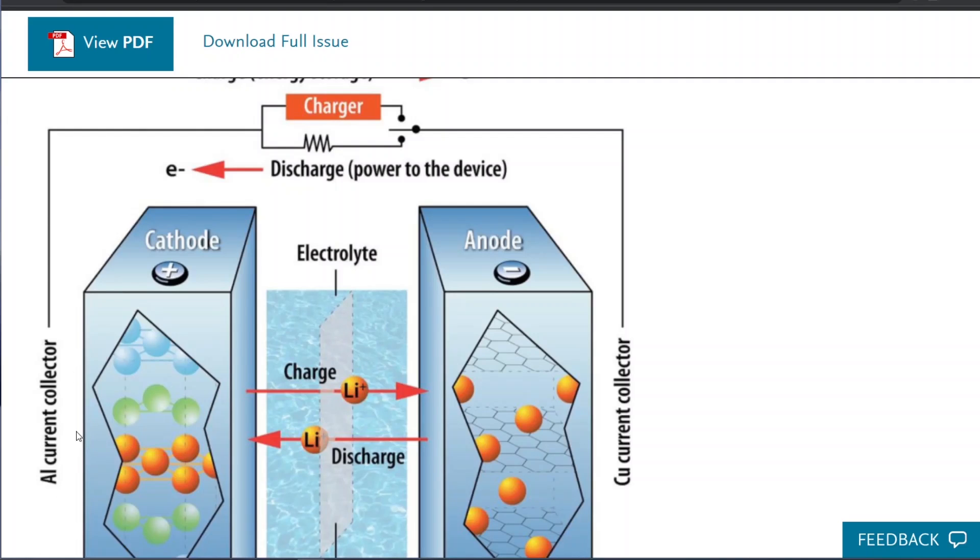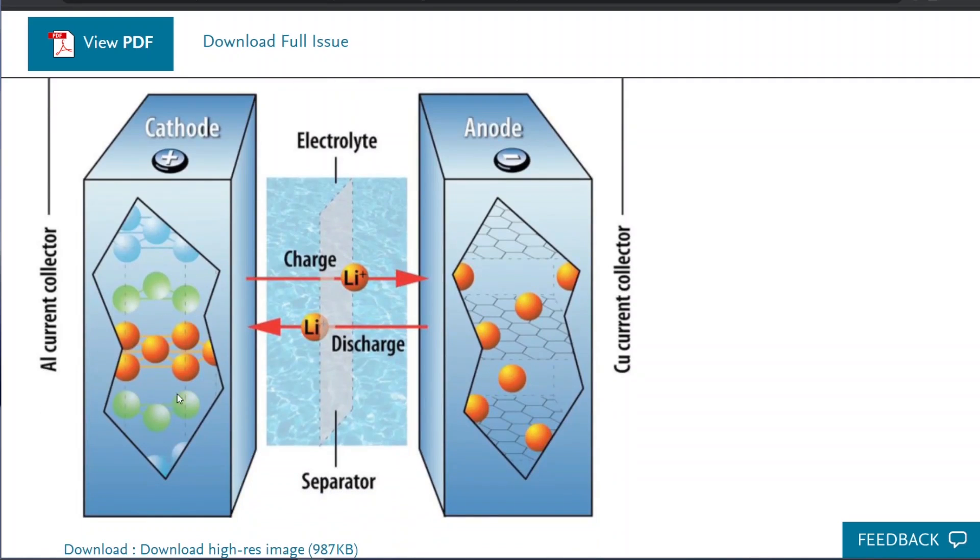The lithium ions travel across and intercalate in the anode. And then when you discharge it and add a load to it, the lithium ions want to go back to this area where they're more stable. And since the electrons can't cross this electrolyte, they have to travel through the wire and do some work before they get over to this side.